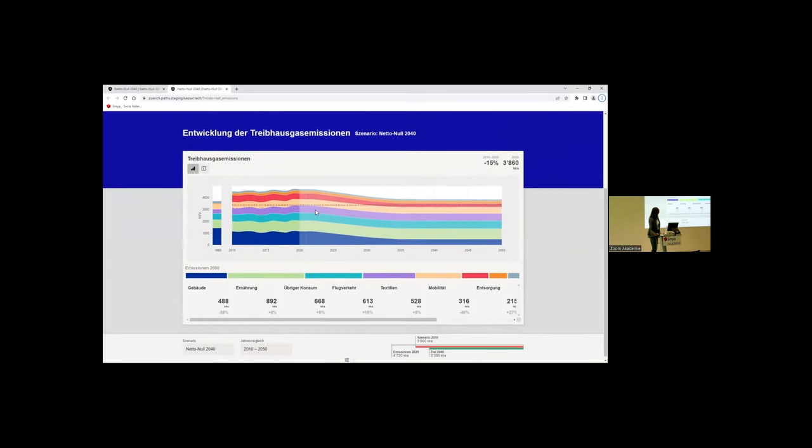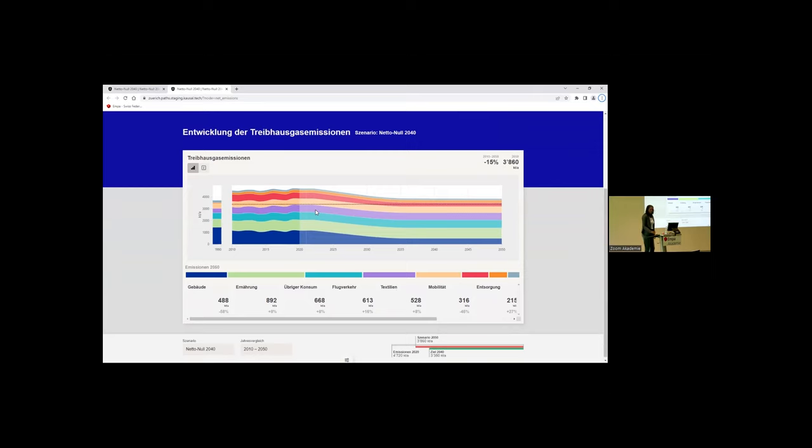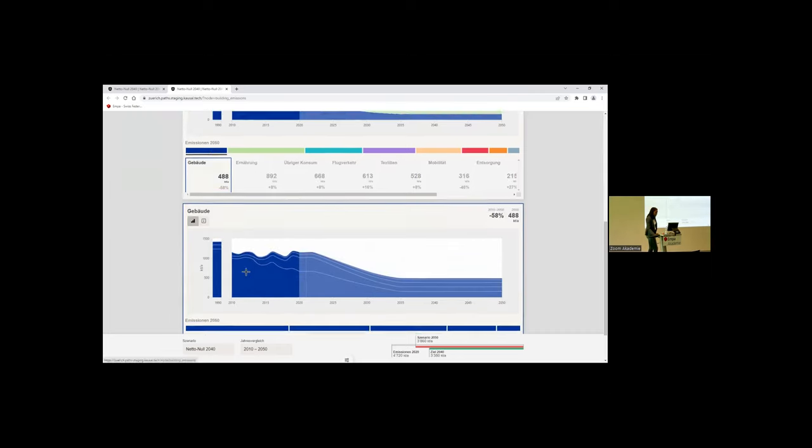What you can see here is overall greenhouse gas emissions. If you go over these different sectors, you see the building sector, you see nutrition, you see other consumer goods, you see flights from the city of Zurich, textiles, mobility, waste management, and we have a little bit of agricultural activities. But you can actually also go into detail. If you click on one of these, and then you try to find out within the buildings where does the CO2 come from, you figure out it's fossil fuel, then you have electricity, and then there's district heating, and the smallest part is from biofuels.